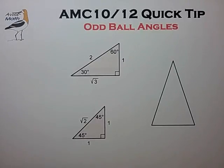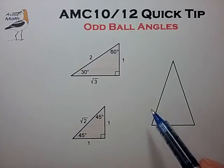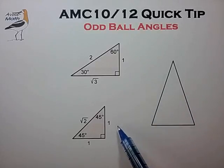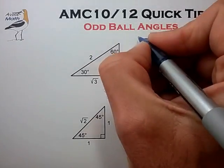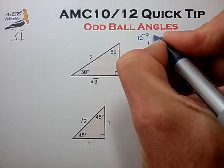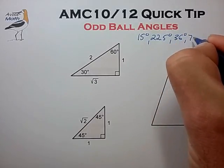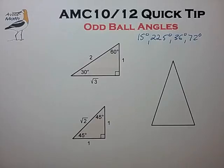In this video we'll talk about oddball angles in the AMC. In geometry we know how to work with 30, 45, and 60 degree angles because we have convenient right triangles to refer to, and we can work out any trig ratio of interest using these simple triangles as a guide. But in more difficult AMC questions, we sometimes encounter angles of 15 degrees, 22 and a half degrees, 36 degrees, and sometimes 72 degrees. It's helpful to have a few constructions to deal with these angles, so let's work those out in this video.